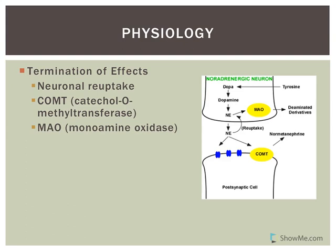There are certain medications - COMT inhibitors - given to people with Parkinson's disease. People with Parkinson's don't have sufficient levels of dopamine and are given levodopa to replace it. Inhibiting the breakdown of dopamine (in this case levodopa) increases its bioavailability, prolonging its effects in those people.